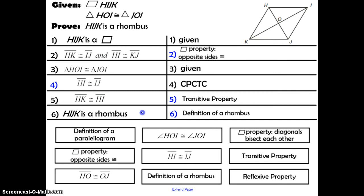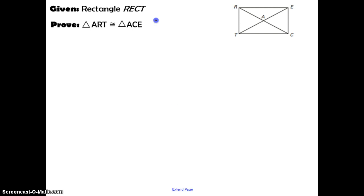If you're in the regular geometry class, stop here — you're done for today. If you're in honors, keep going: write out the full proof from the given to the conclusion on your own. We'll go through it in class next time.